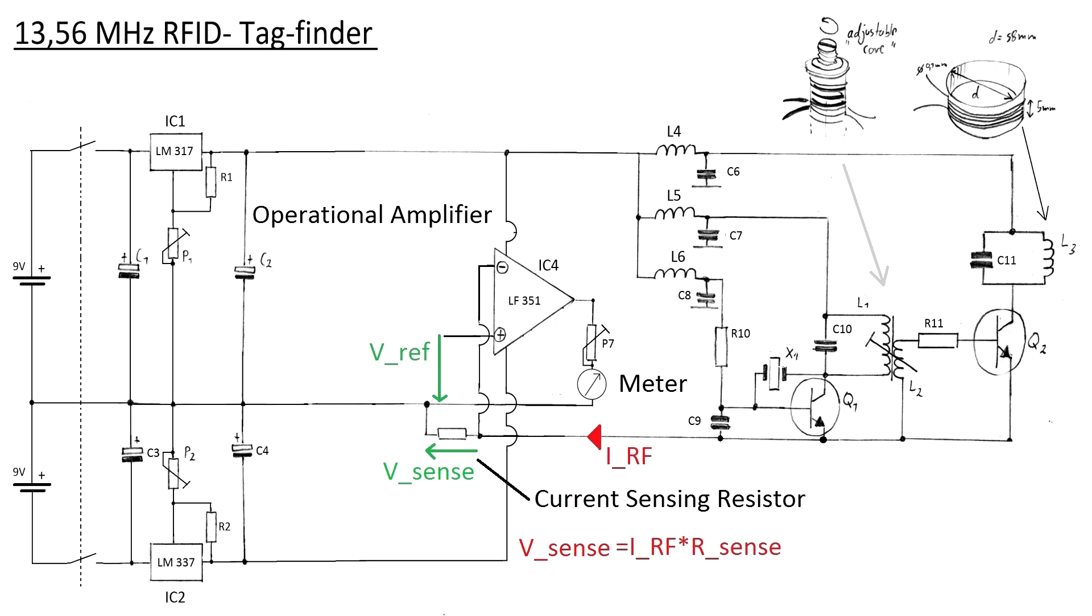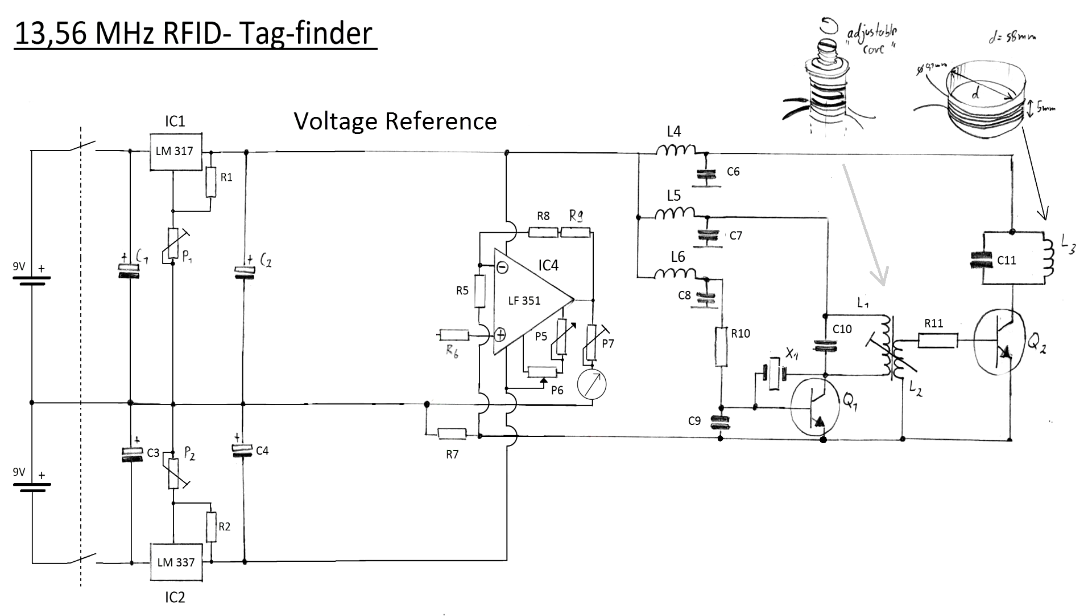That operates on the frequency of 13.56 MHz, as most tags do. To null the op-amp and to calibrate the factor of amplification, additional resistors and trimmers are necessary.